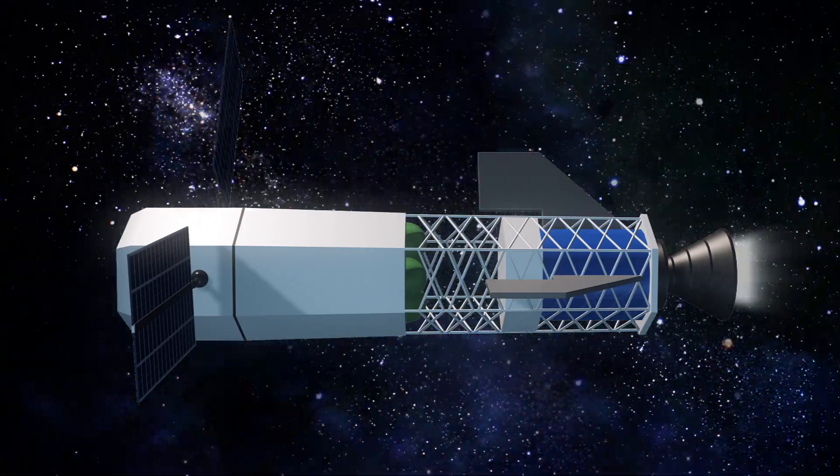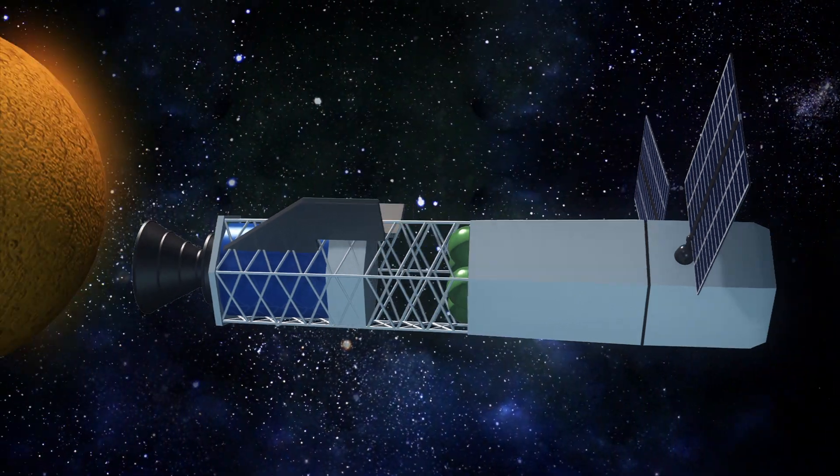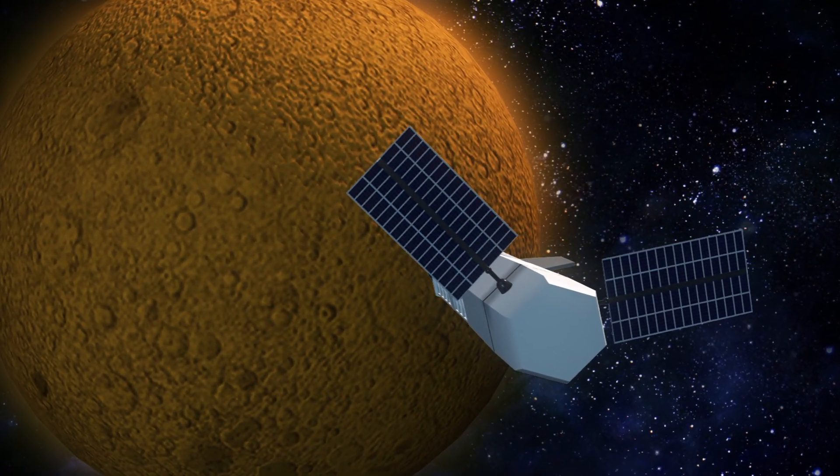The fusion rocket engine will only be active for 10% of the voyage, half of the time to speed away from the Earth and the other half to slow down upon arrival near Mars.